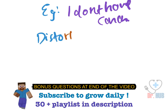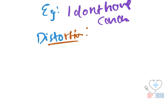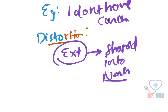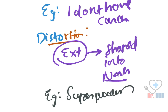Next we move on to distortion. Distortion is grossly reshaping the experience of external reality to suit their needs. An example of this is an individual who believes they have superpowers and feels they are superior to others. This is a good example of distortion.